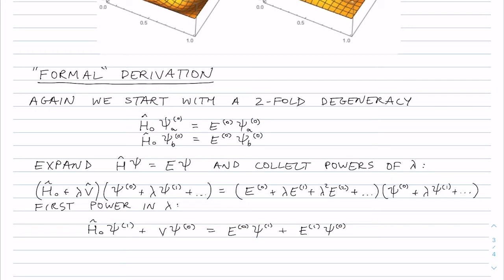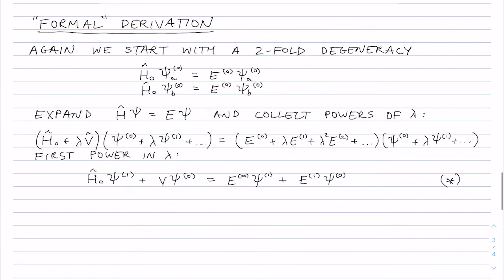That is H naught psi 1 plus V psi 0 is equal to E naught psi 1 plus E1 psi 0. I think I need to give this equation a name, I'll call it asterisk, and so I take this one and I'm going to use it twice. So firstly I'm going to multiply it by the bra psi a naught and integrate, very similar to what we did before.